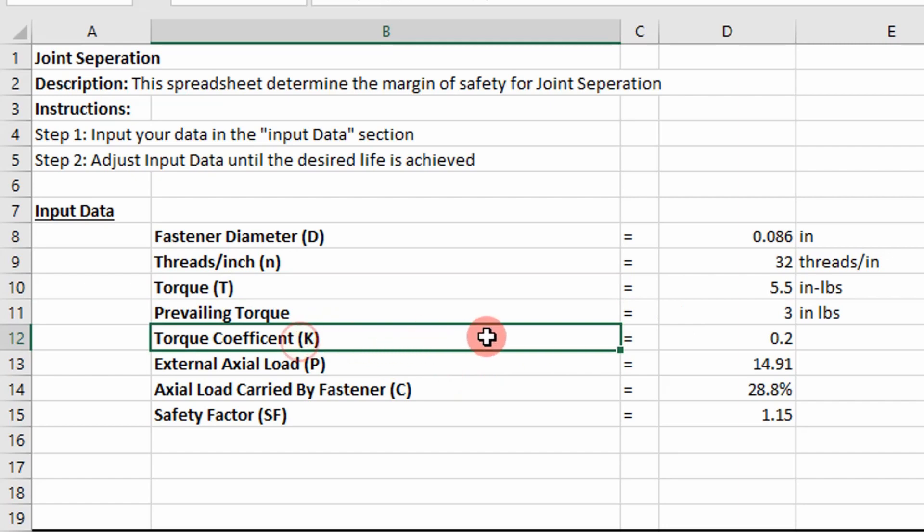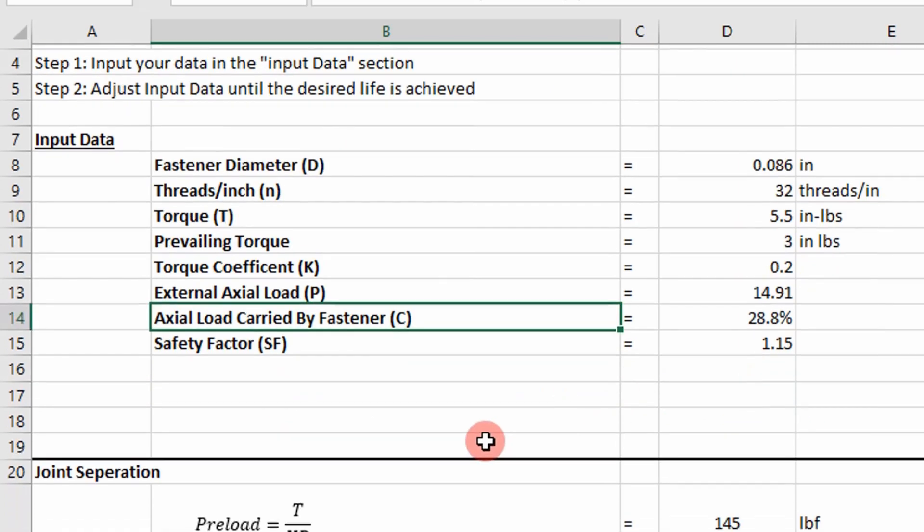A torque coefficient is another input. Point two is used quite often. The external axial load applied to the joint, which you pull from your FEA analysis. The axial load carried by the fastener, which we determined in the previous video, and then a safety factor. I'm using 1.15 in this case.